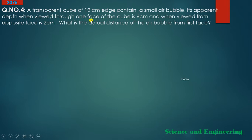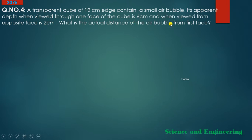Question 2: A transparent cube of 12 cm edge contains an air bubble. Its apparent depth when viewed through one face of the cube is 6 cm, and when viewed from the opposite face is 2 cm. What is the actual distance of the air bubble from the first face?